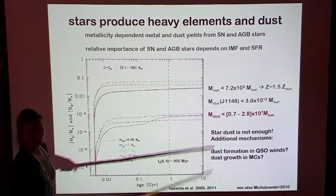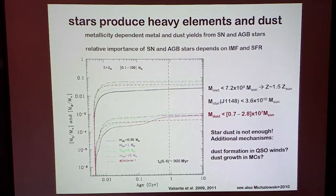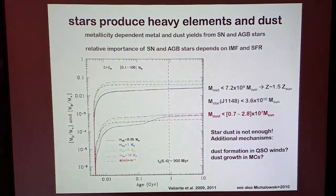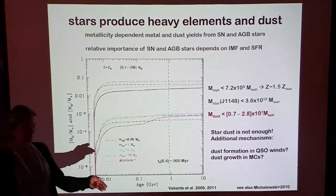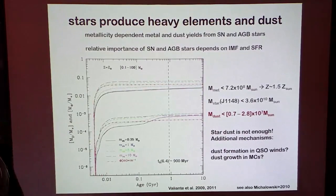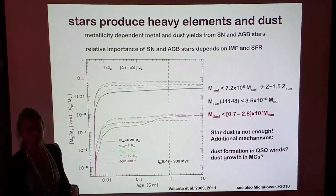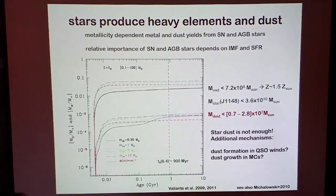This is clearly one order of magnitude lower than what you require to explain the far-infrared emission, so you need some additional mechanisms. Some have been already proposed in the literature, like dust formation in quasar winds. This is an interesting proposal because it decouples the dust enrichment from the stellar population, but you still need the heavy elements to form dust, and the efficiency of this mechanism is still very poorly understood because it depends on many unknown properties of the winds — clearly something which deserves more investigation.